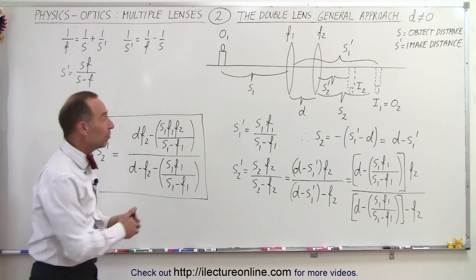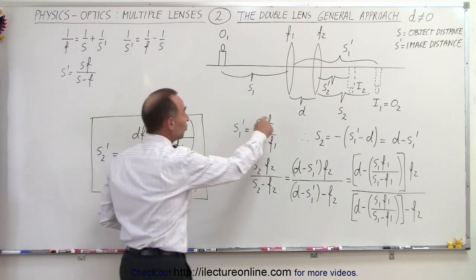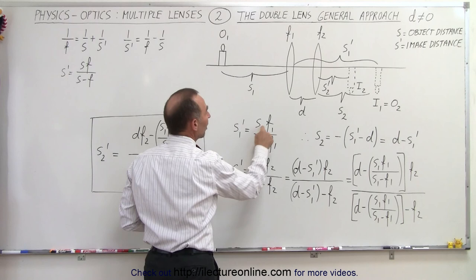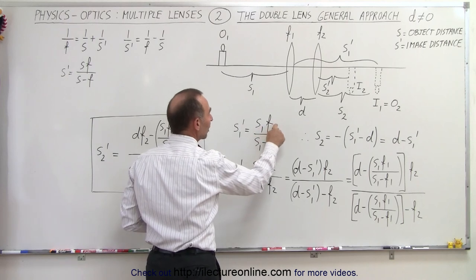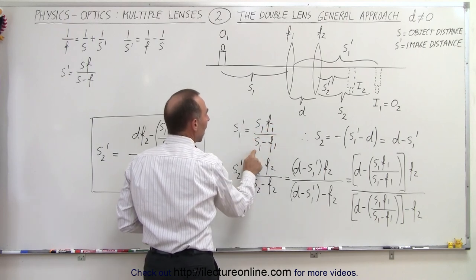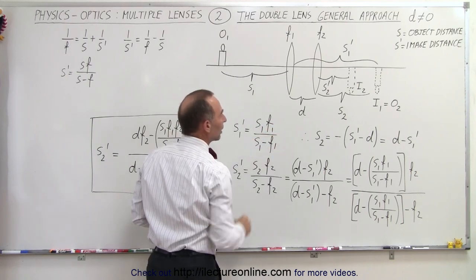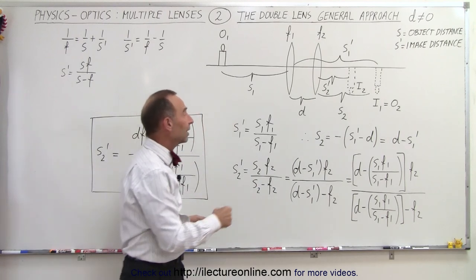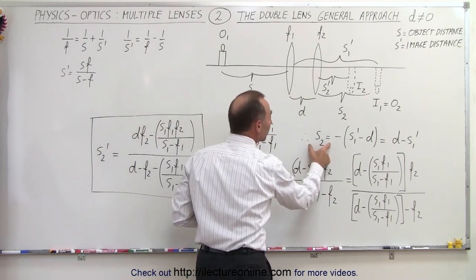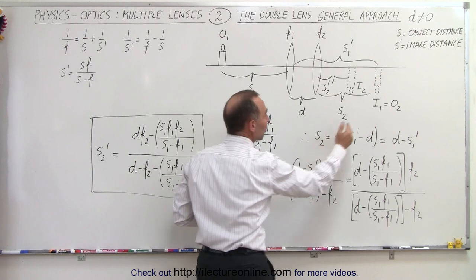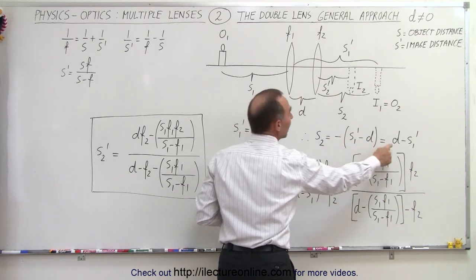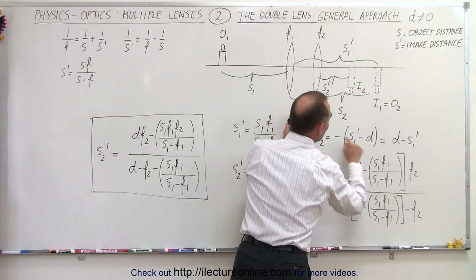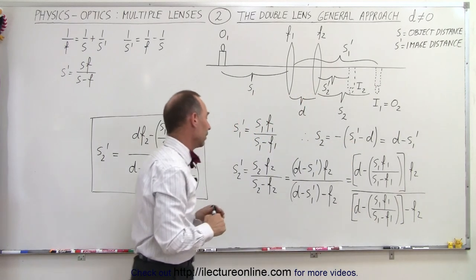Using that equation for the first image, the distance to the first image s1' is equal to the object distance s1 times the focal length f1 of the first lens, divided by s1 minus f1. Then s2, the object distance for the second lens, is equal to d minus s1' because of the negative sign.